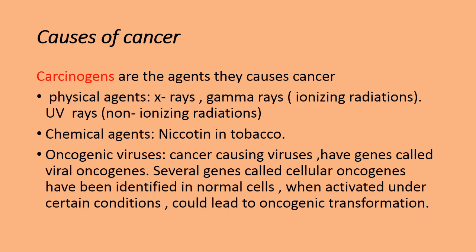Cellular oncogenes are certain genes present in normal cells. Under certain conditions, these genes get activated and may lead to the conversion of normal cells into cancerous cells. So the oncogenic transformation of normal cells is brought about by cellular oncogenes. In biological agents, we have both viral oncogenes — present in oncogenic viruses — and cellular oncogenes present in normal cells. These carcinogens convert normal cells into cancerous cells, ultimately leading to malignant tumors.